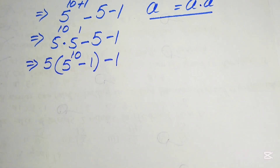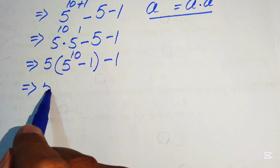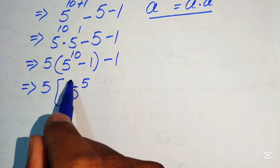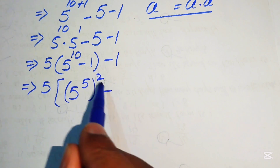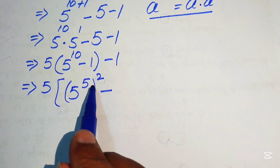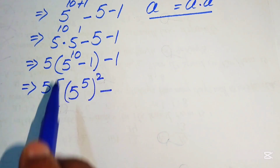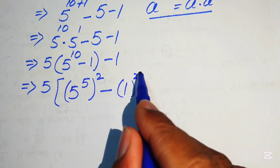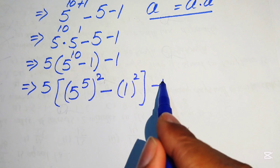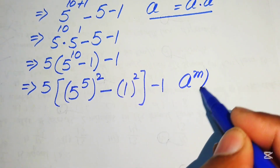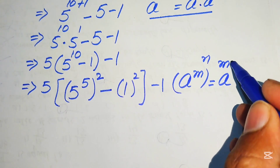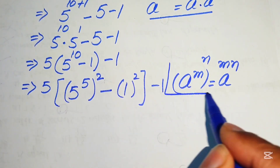We rewrite 5 to the power of 10 as 5 to the power of 5, with the whole exponent squared — because 5 times 2 equals 10. We also write 1 as 1 squared. Then we apply the law a to the power of m to the power of n equals a to the power of m times n.